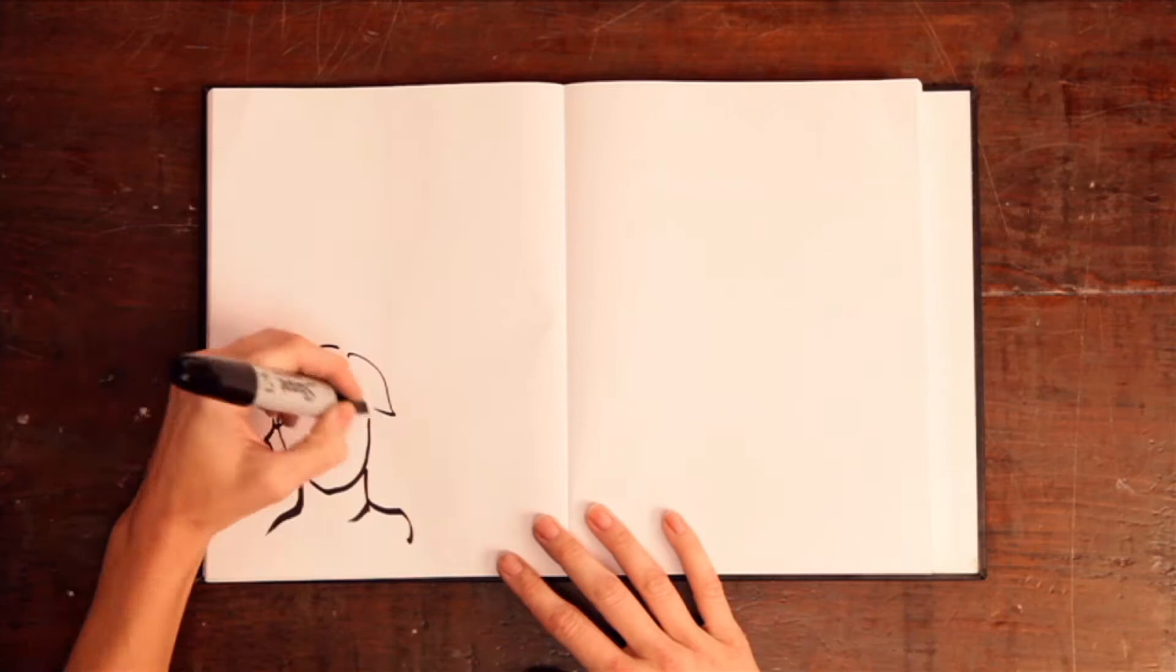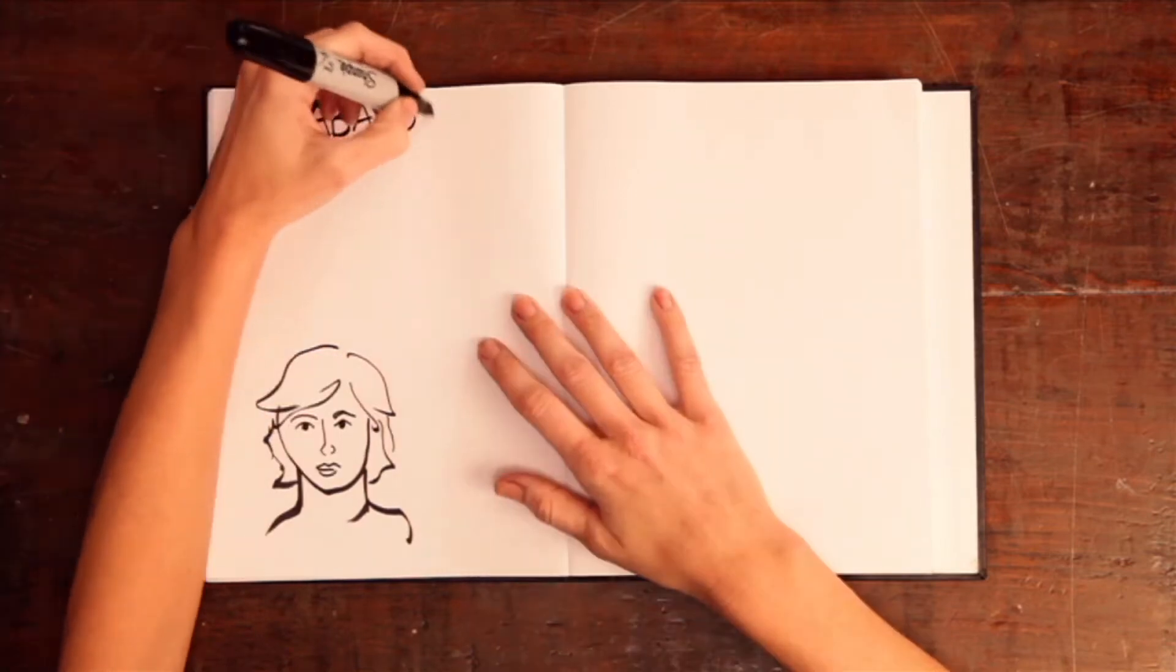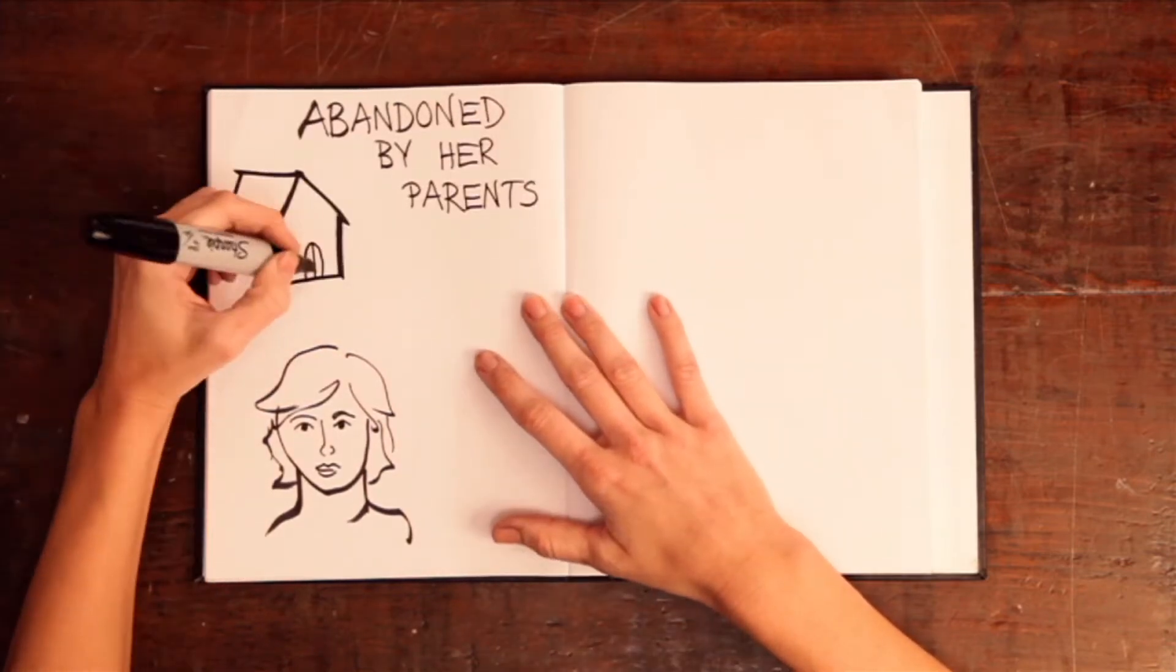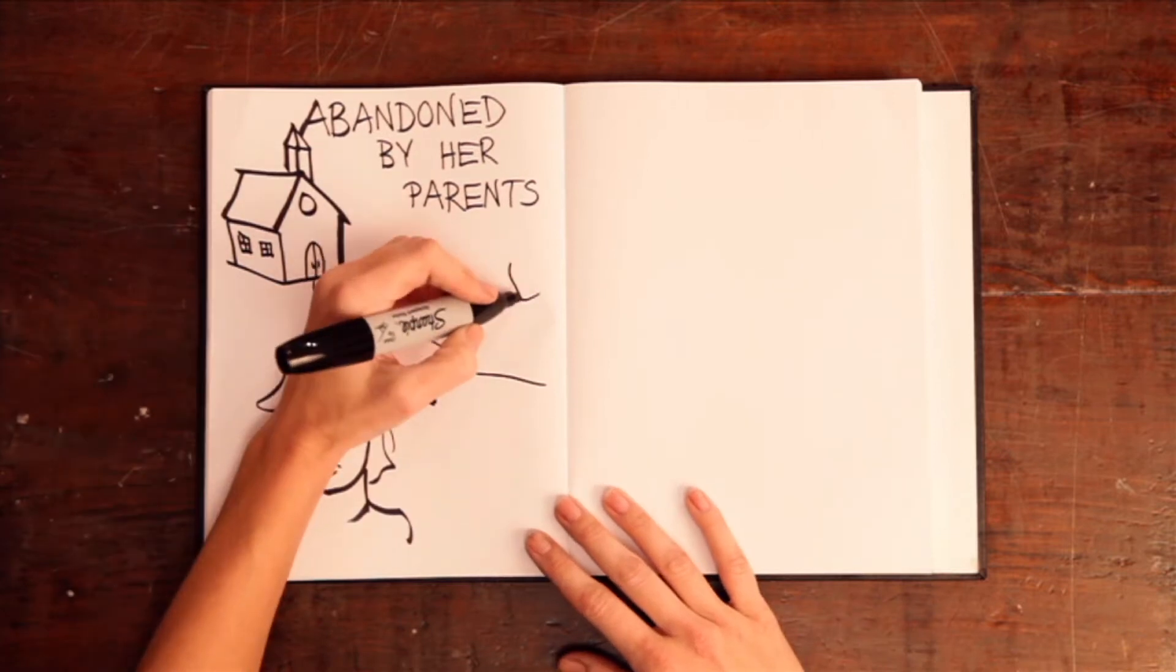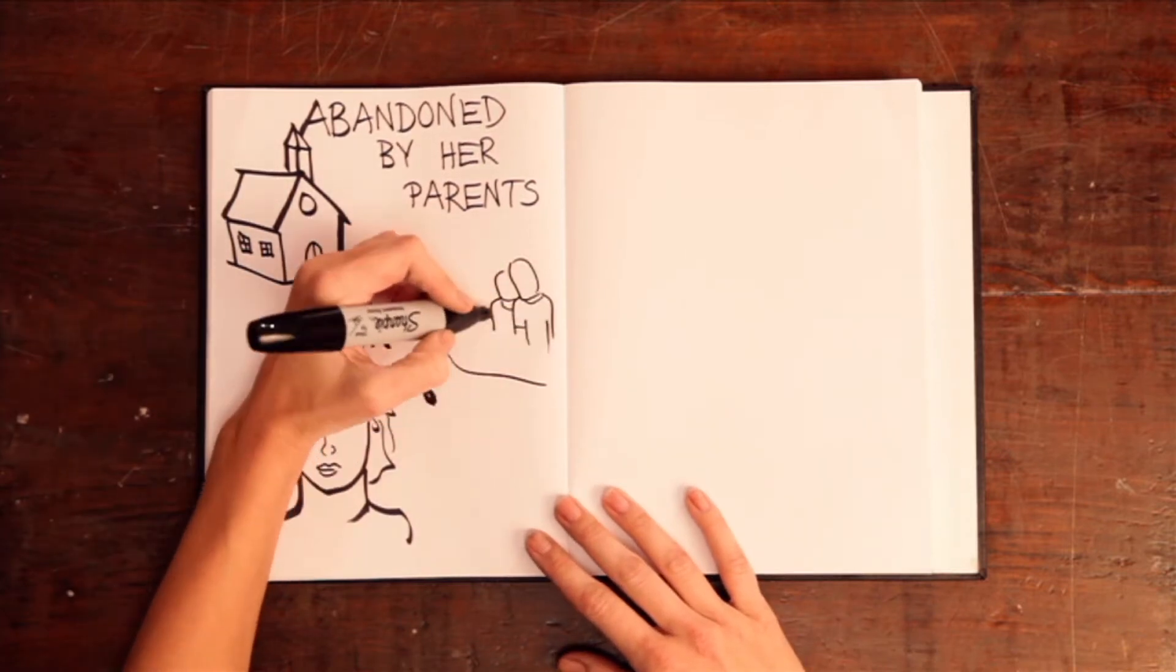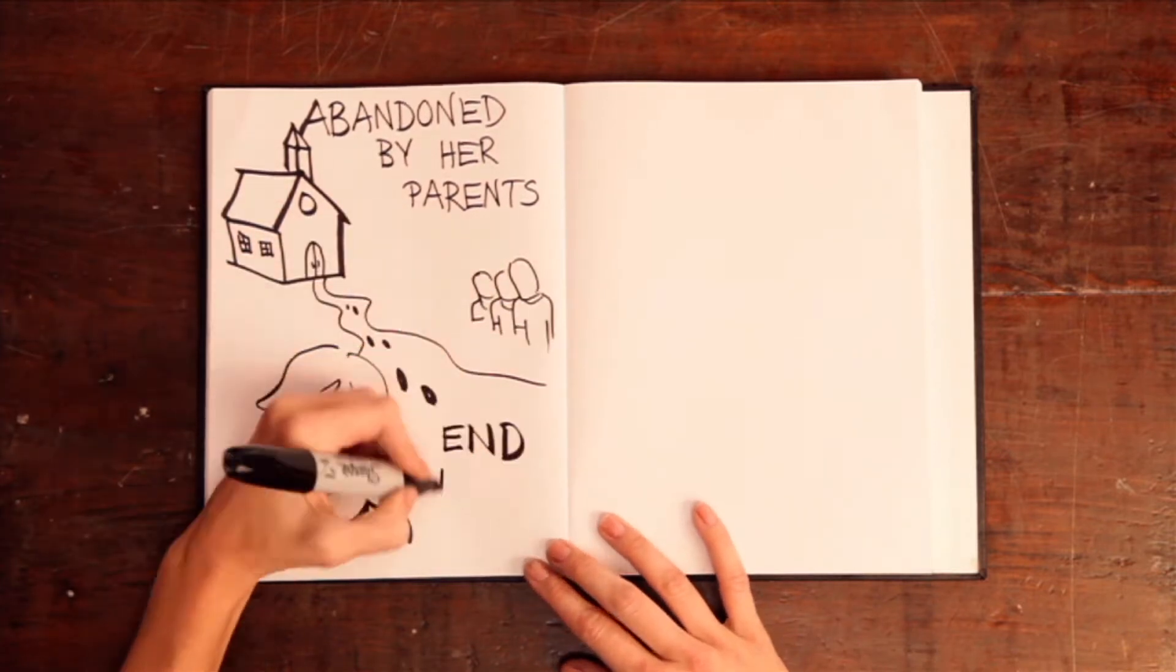I heard about a girl named Maria. Abandoned by her parents, she dropped out of school to provide for her three brothers. She was hopeless enough to want to end her life.